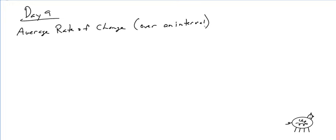Greetings math fans. Alright, so this is day 9. And here we're going to talk about something called the average rate of change. And this is basically over an interval. The average rate of change is the amount of change divided by the length of the interval.